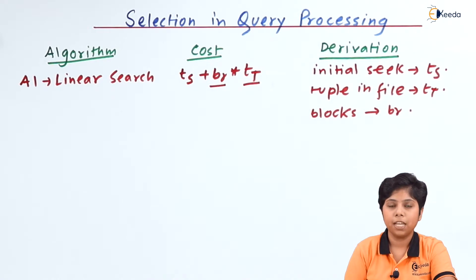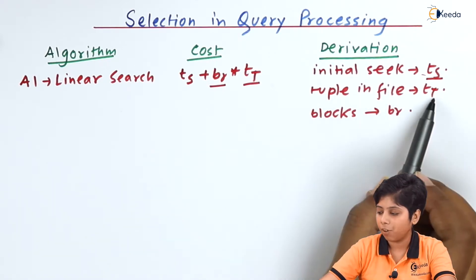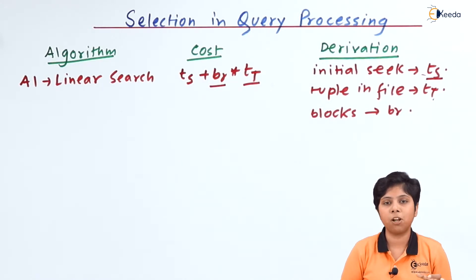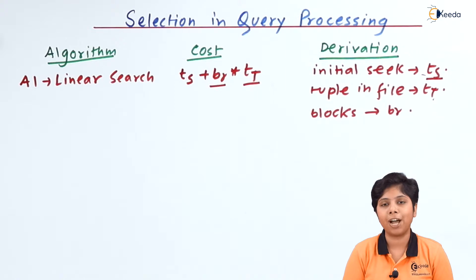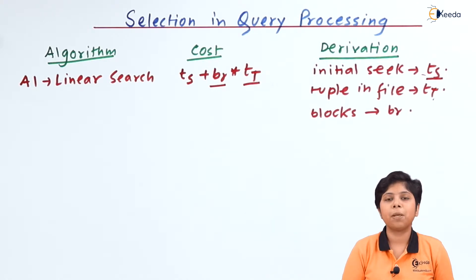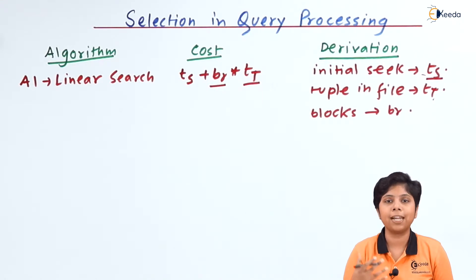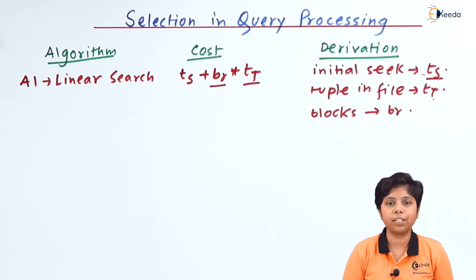The index is represented as br, where the initial seek ts is made for the first scan, then it goes to the tuple in the file (tt) into the block number, since more than one tuple can belong to the block the index is pointing to. In a B+ tree index, there is index scan on linear search — we search the index first, and the pointer directs us to the value. This access path locates the value inside the directory structure.